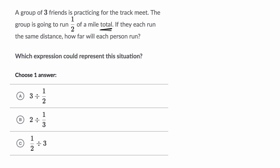So pause this video and try to figure this out on your own. All right, the way I think about it is there's some distance that they're going to try to travel. In this case, it's half of a mile. And they're going to divide that distance amongst the three friends. So the distance that each of them are going to run is the total distance divided by the number of folks that are running.